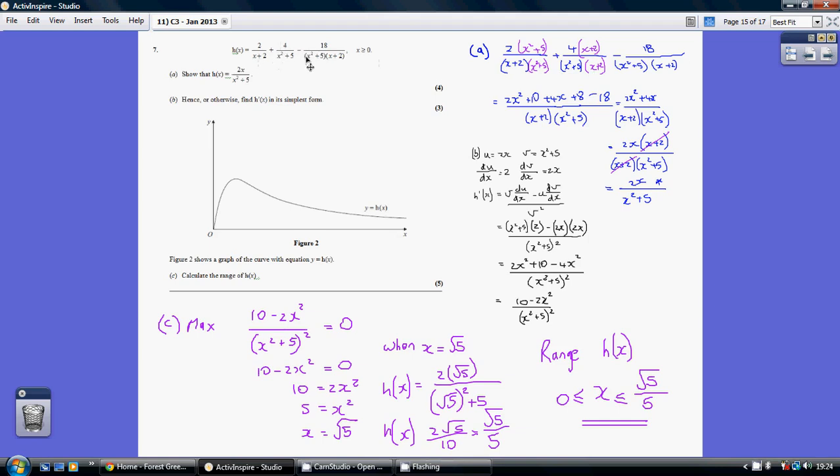The common denominator is going to be x squared plus 5 multiplied by x plus 2, because that picks up both terms. This first term we multiply top and bottom by x squared plus 5. This second term we multiply top and bottom by x plus 2.